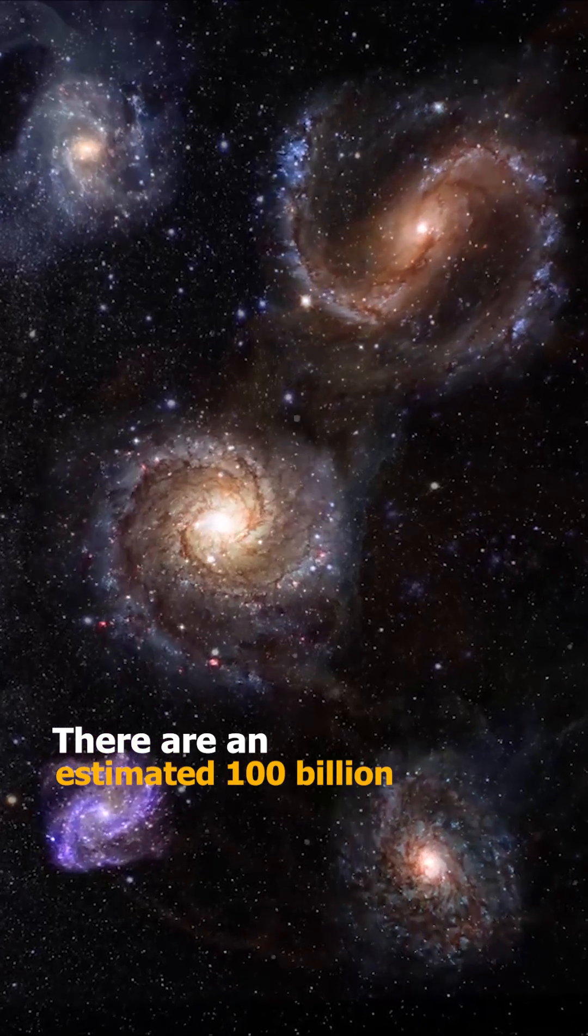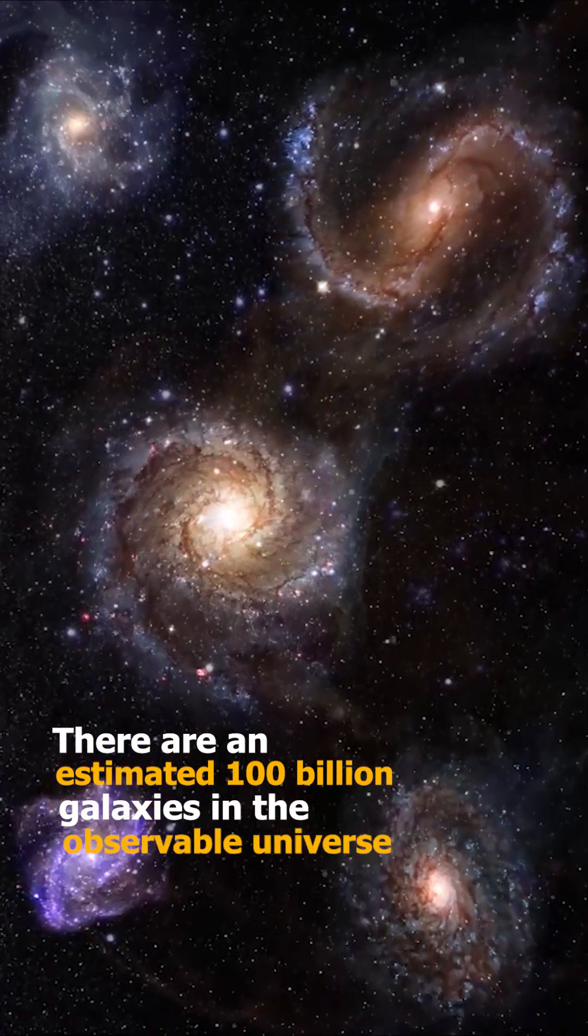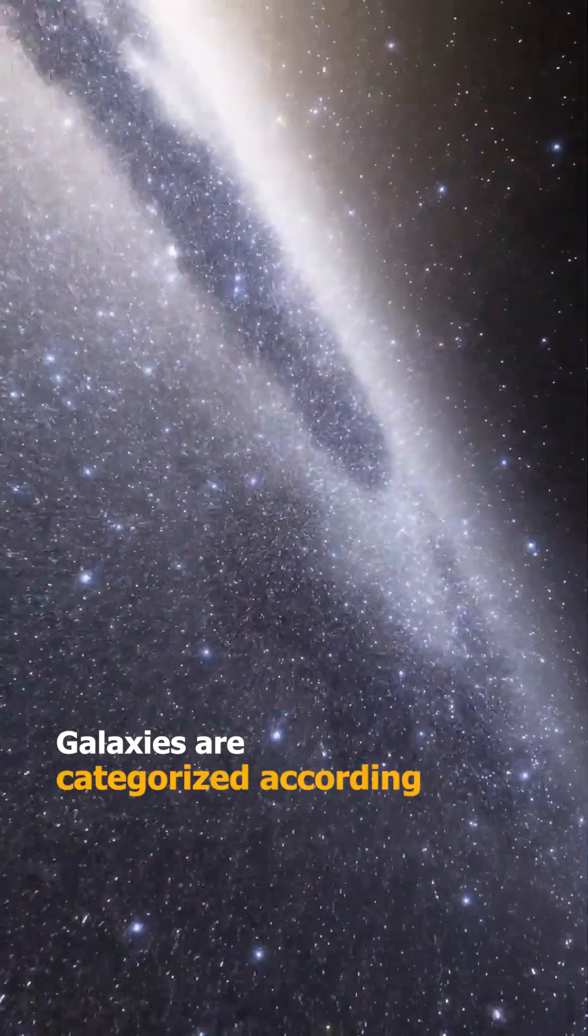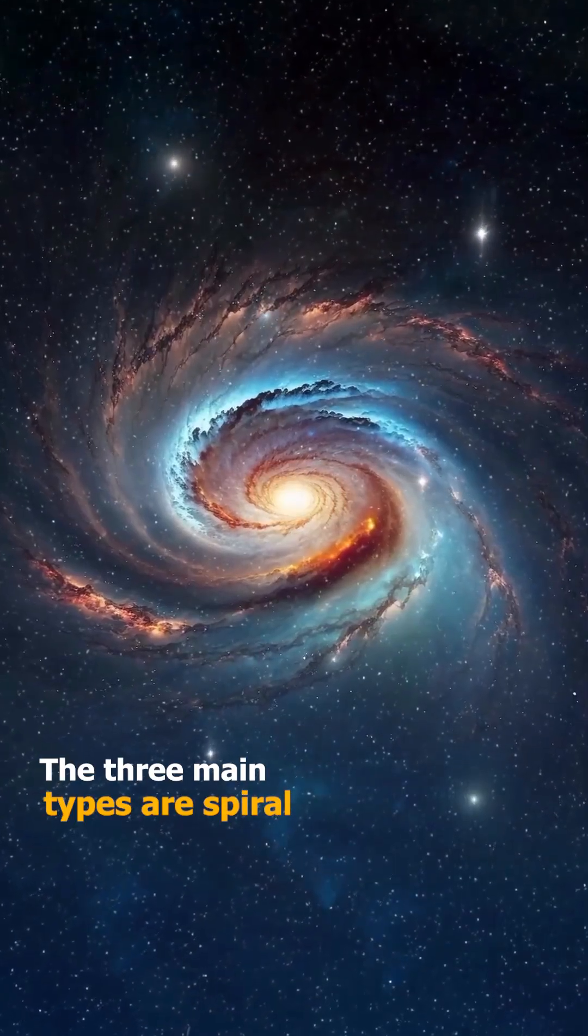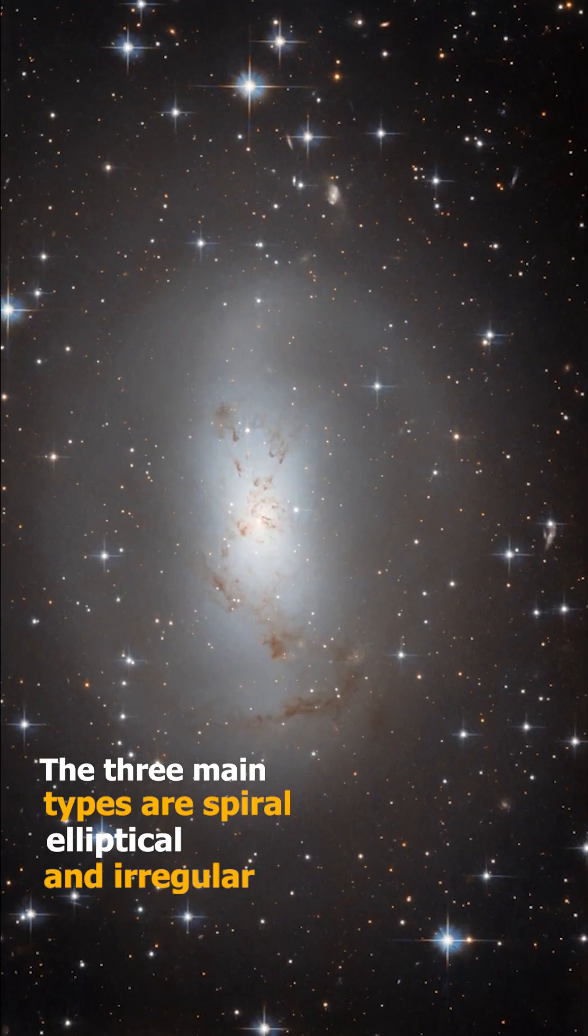There are an estimated 100 billion galaxies in the observable universe. Galaxies are categorized according to their shape. The three main types are spiral, elliptical, and irregular.